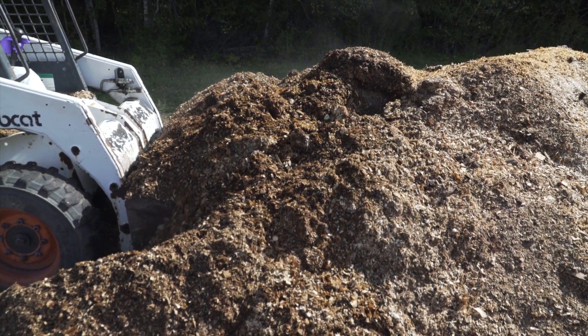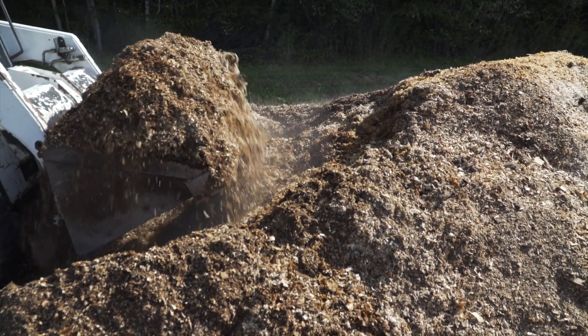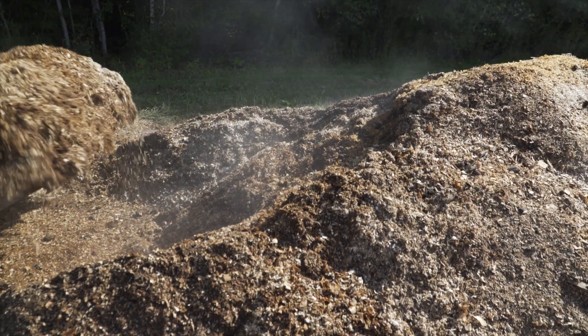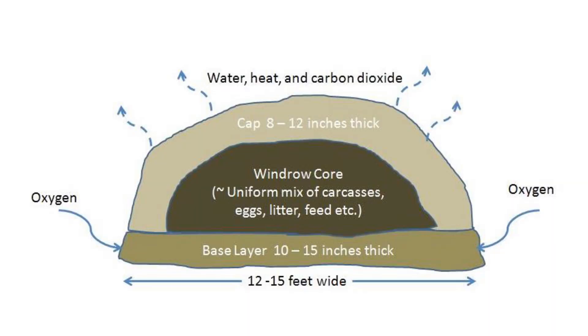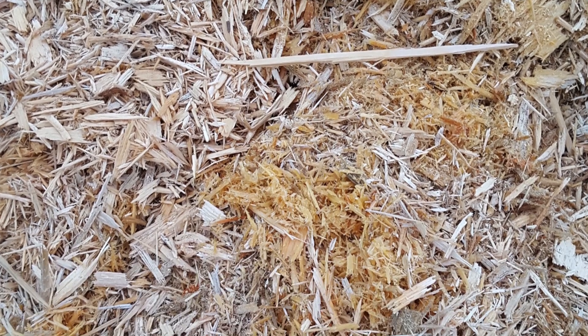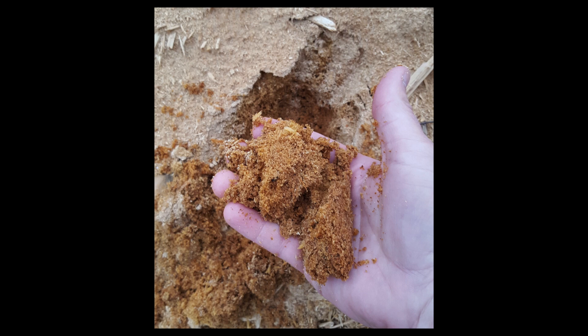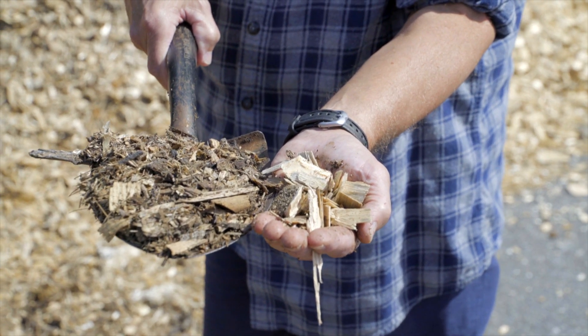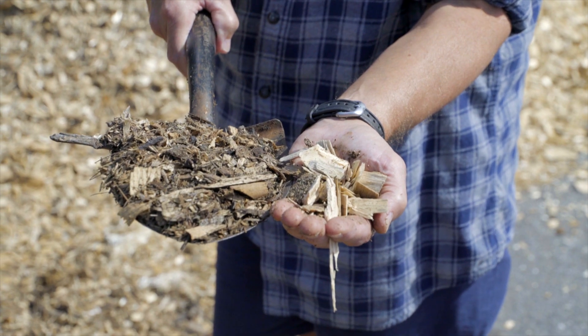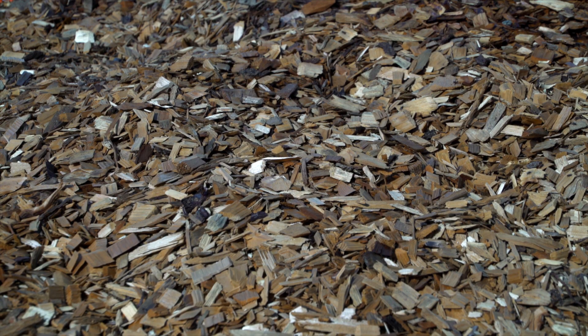The bacteria and other organisms responsible for generating the heat that inactivates the avian influenza virus require an adequate supply of oxygen. When compost windrows are appropriately designed, oxygen naturally flows in through the pore spaces in the base of the windrow and out through the top. Particle size is a key factor in determining a material's ability to transfer oxygen. Carbon materials should be porous and bulky enough to allow adequate air flow. Very fine particles, like wood dust and other wood byproducts, have very little pore space and do not transfer oxygen well. However, materials with particle sizes greater than two inches do not break down during the composting process and will likely generate a product that is unacceptable as a soil amendment.